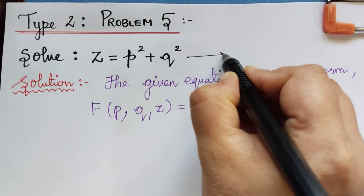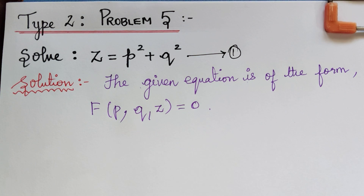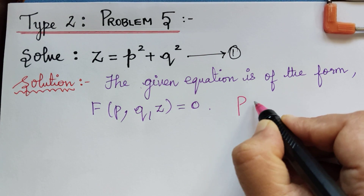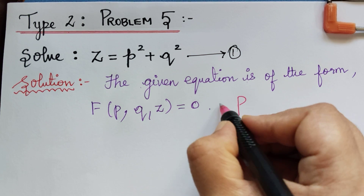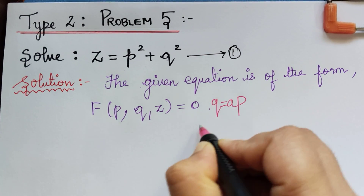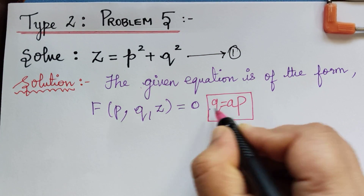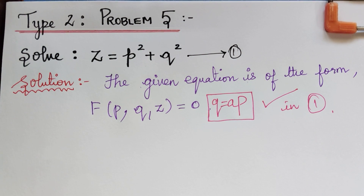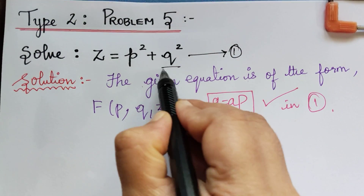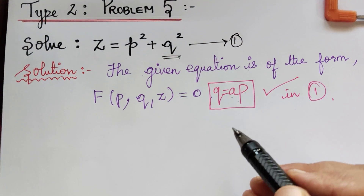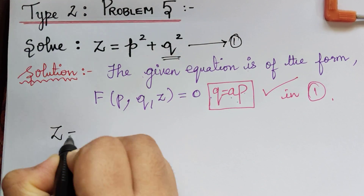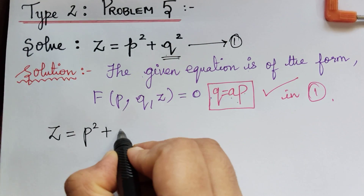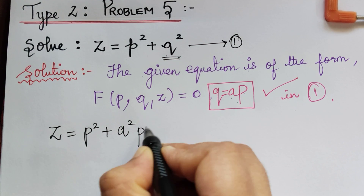Mark the given equation as equation 1. In order to solve problems of this type, we have to make a substitution of q equal to ap. So q equal to ap is the substitution we make in equation 1. At the place of q, replace it by ap. So z will be equal to p square plus a square p square.